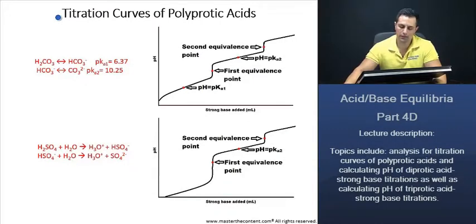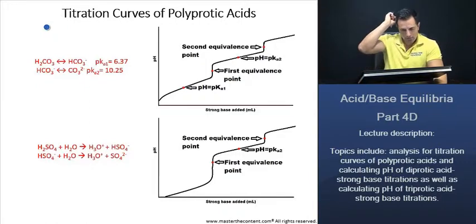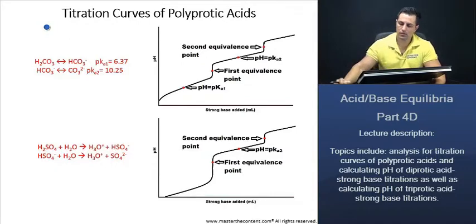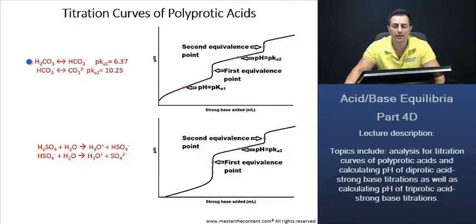Titration curves of polyprotic acids. There are three polyprotic acids that you should be familiar with. You should be familiar with phosphoric acid, which we'll take a look at next. You should be familiar with carbonic acid. You should also be familiar with sulfuric acid.